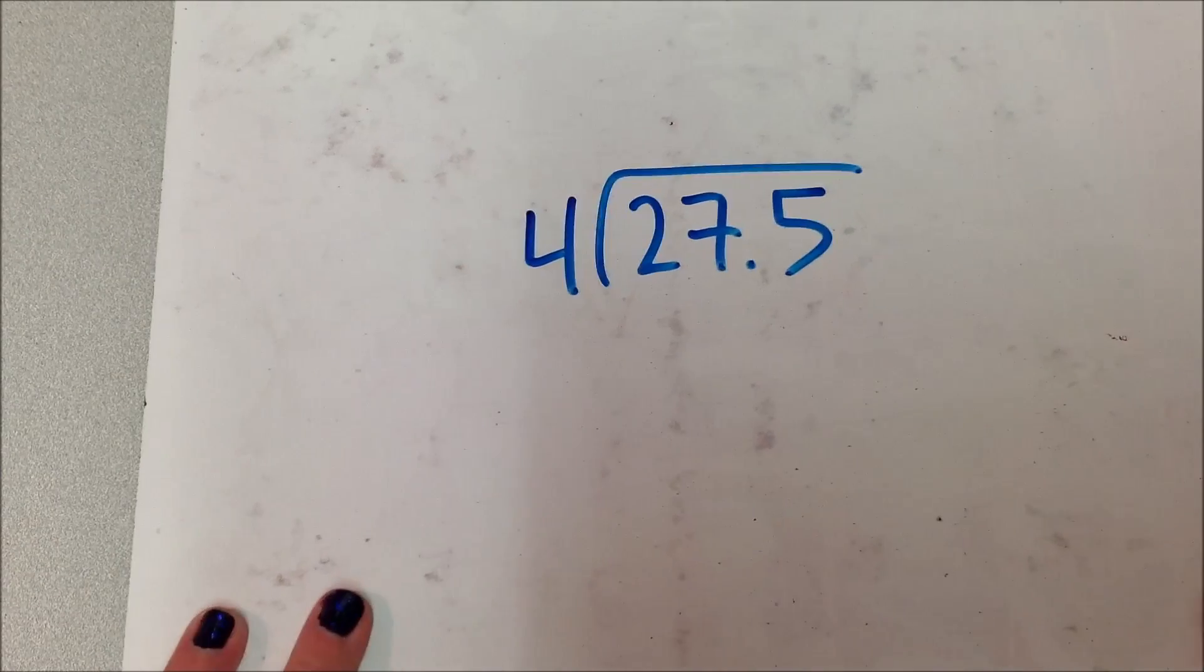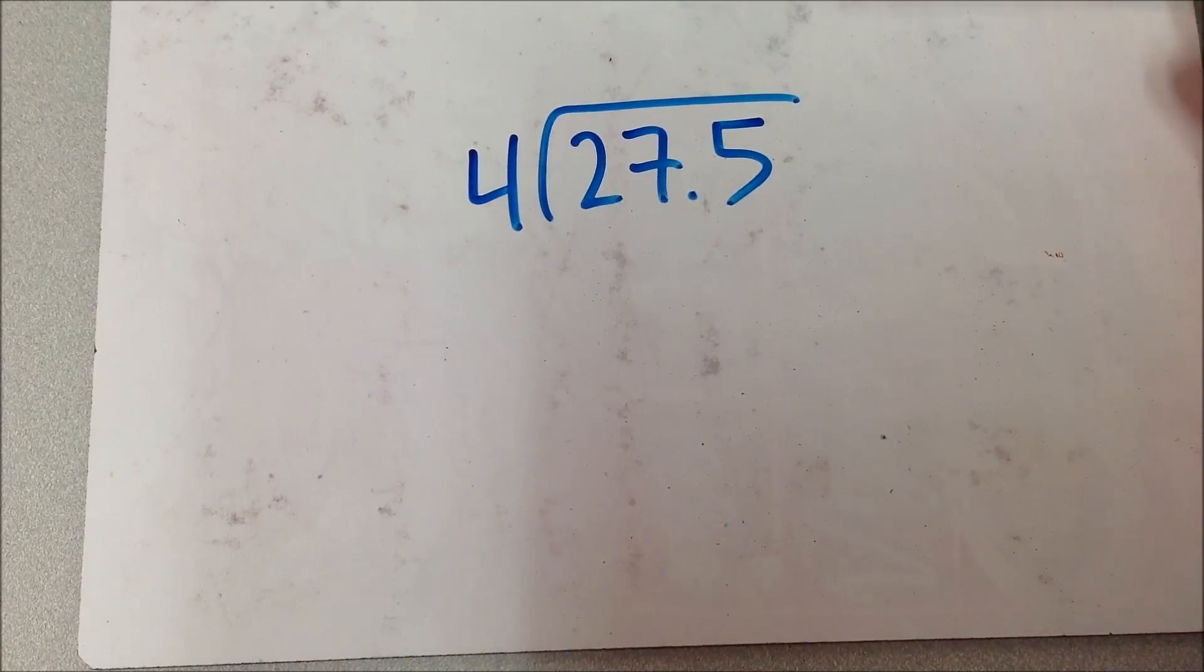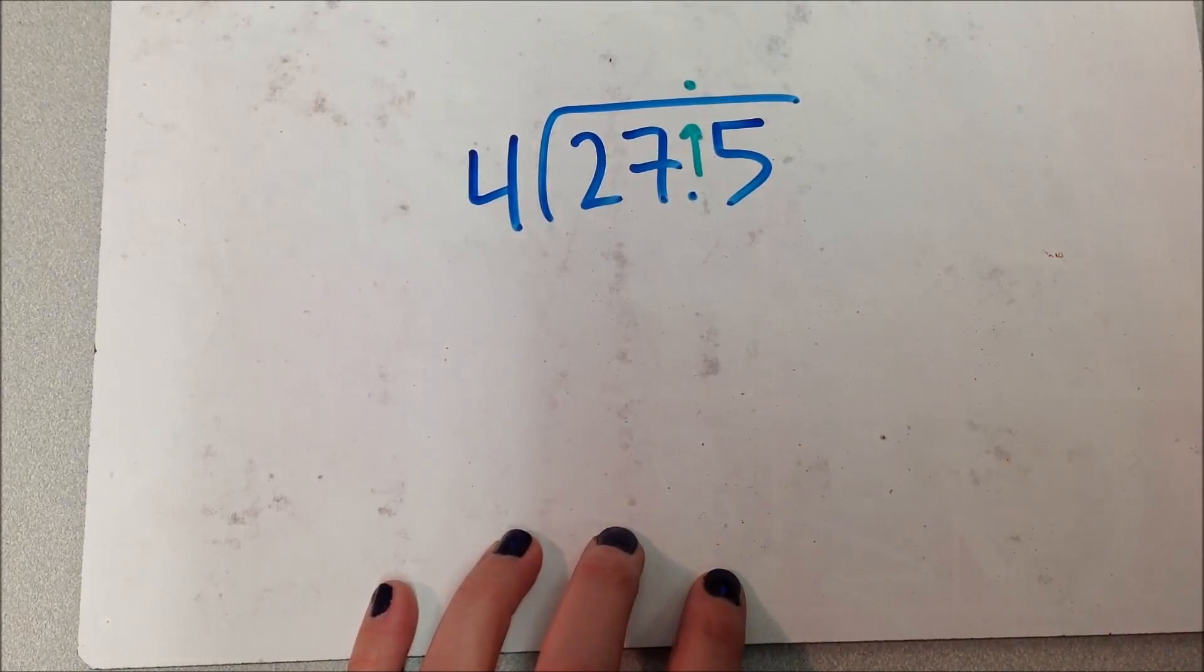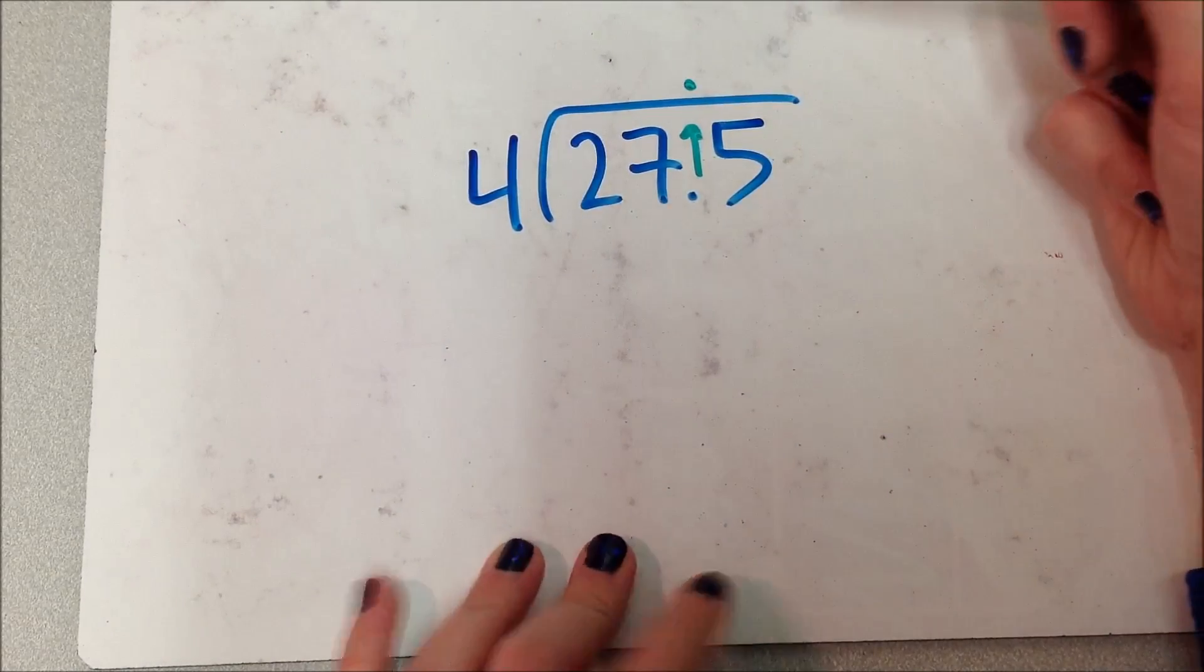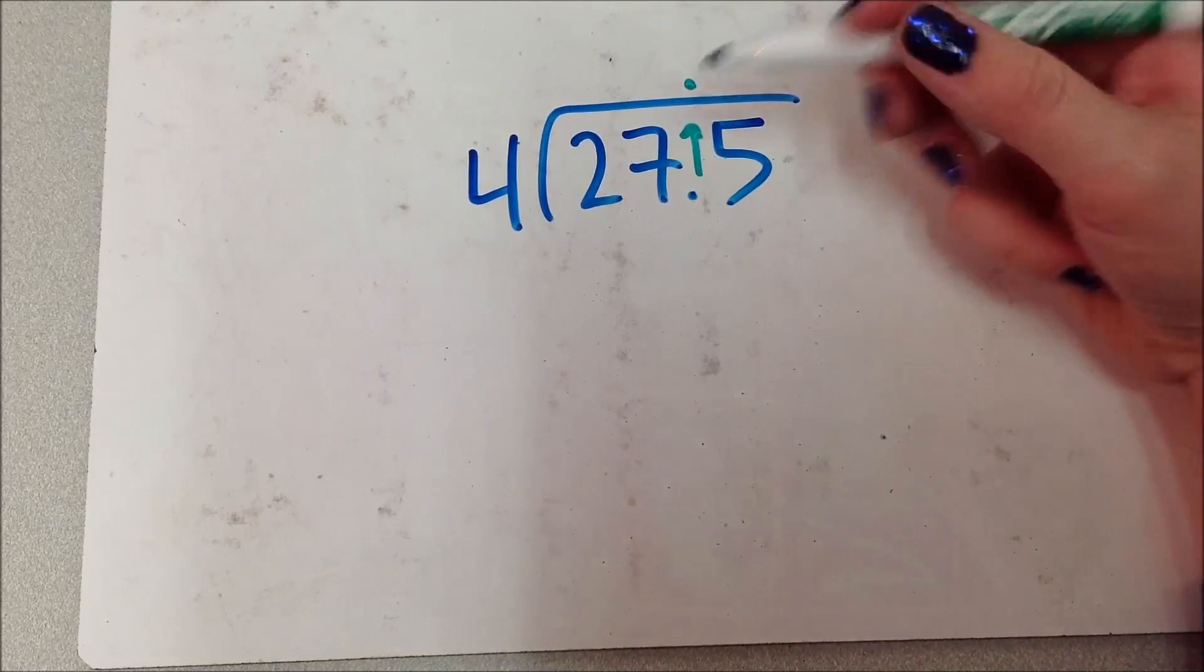Let's look at another example, just because this is sort of a weird phenomena. And we just want to practice it, I think, just a little bit. Okay, 4 divided into 27.5. So the first thing I'm going to do, bring my decimal point straight up, right? Like we've been practicing in the last video. 4 into 27 can go, because it can't go into 2.